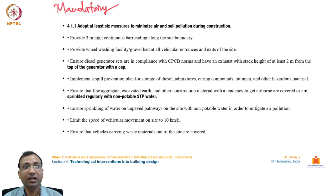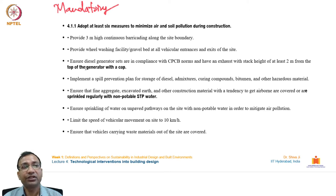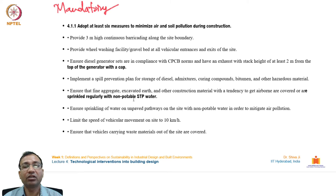Mandatory points in construction management include: adopting at least six measures to minimize air and soil pollution; providing three-meter-high continuous barricading along site boundaries; providing wheel washing and gravel bed facilities at all vehicular entrances; ensuring diesel generators comply with CPCB norms with exhaust stack height of at least two meters; implementing a spill prevention plan for diesel, admixtures, bitumen, and hazardous materials; and covering or regularly sprinkling non-potable STP water on fine aggregates and excavated earth.